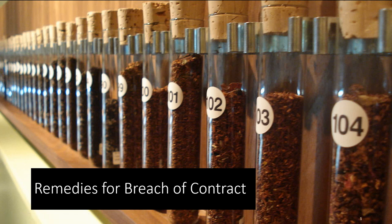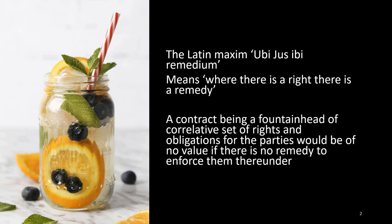When one party does not perform what they are supposed to perform as part of their contract, that is called a breach. But if there is a breach of contract, what is the option, what is the solution available to the other party? That is what we are going to understand with the remedies for breach of contract. There is a Latin maxim: 'ubi jus ibi remedium,' which means where there is a right, there is a remedy. So if somebody is getting a right with respect to a contract, they are also getting a remedy. A contract being a fountainhead of a correlative set of rights and obligations for the parties would be of no value if there is no remedy to enforce them.